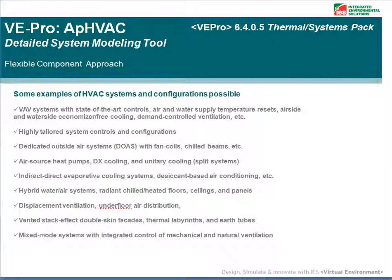Some examples of HVAC systems and configurations possible are: VAV systems with state-of-the-art controls, highly tailored system controls and configurations, dedicated outside air systems with fan coils and chilled beams, air source heat pumps, indirect direct evaporative cooling systems, hybrid hydronic air systems, displacement ventilation, vented stack effect double skin facades, thermal labyrinths and earth tubes, and mixed mode systems with integrated control of mechanical and natural ventilation.